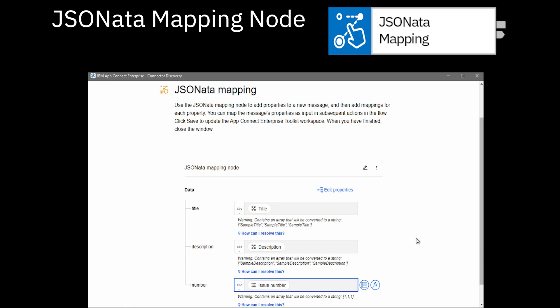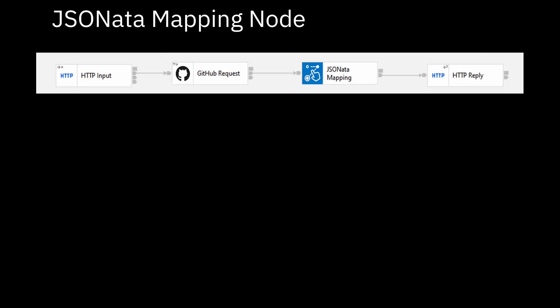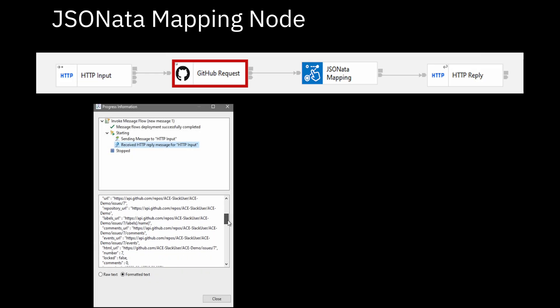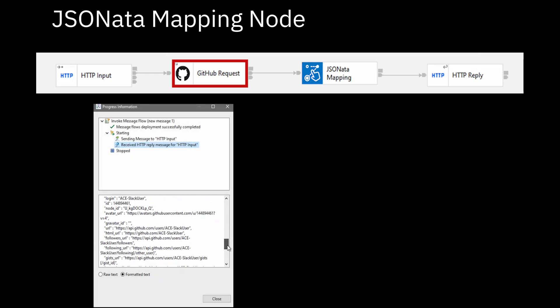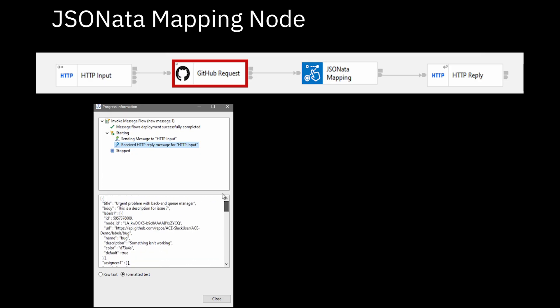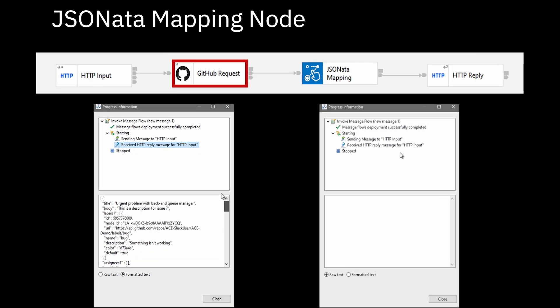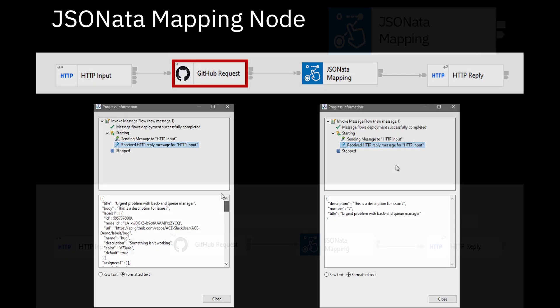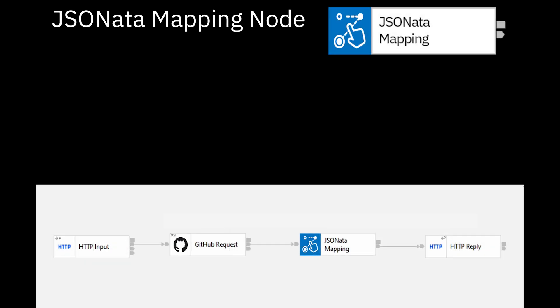The JSON-ARTA mapping node requires JSON schemas in order to be used. Consider this flow which uses a GitHub request node to retrieve a specific issue number that is specified in an input message sent to the HTTP input node. The output from the GitHub request node contains a large amount of JSON data. However, the message flow needs to send back a JSON message that contains a reduced set of properties. The JSON-ARTA mapping node can be used to choose specific parts of the output to be sent to the next node.